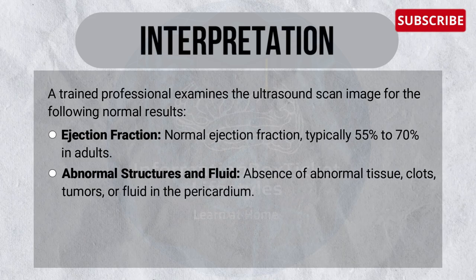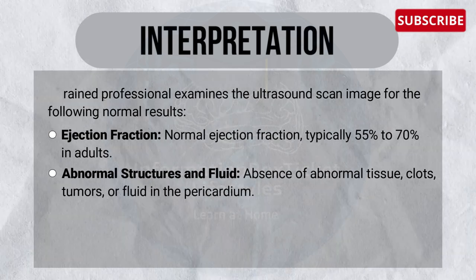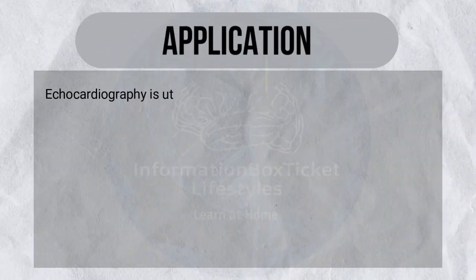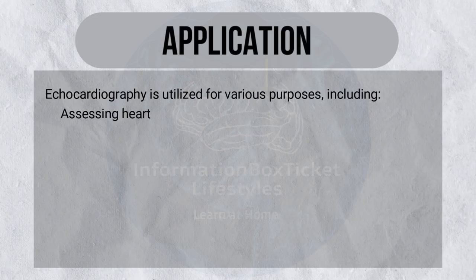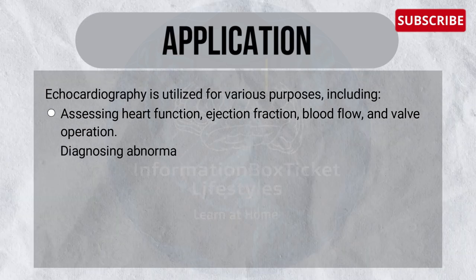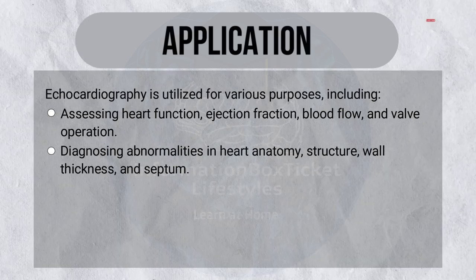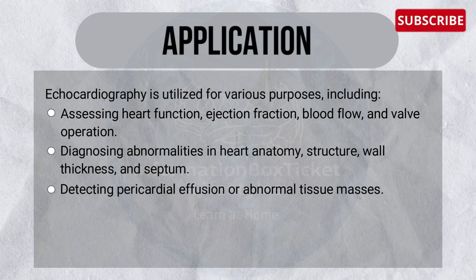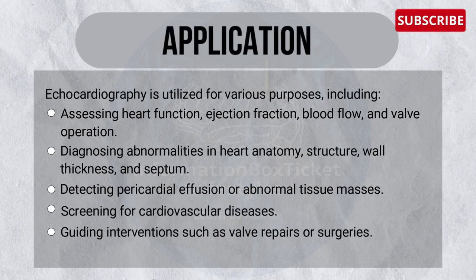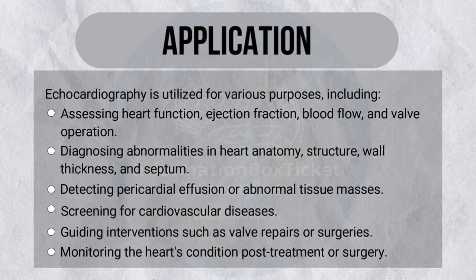No. 6 — Abnormal structures and fluid: absence of abnormal tissue, clots, tumors, or fluid in the pericardium. Application of echocardiography: it is utilized for various purposes, including assessing heart function, ejection fraction, blood flow, and valve operation; diagnosing abnormalities in heart anatomy, structure, valve thickness, and septum; detecting pericardial effusion or abnormal tissue masses; screening for cardiovascular diseases; guiding interventions such as valve repair or surgeries; and monitoring the heart's condition post-treatment or surgery.